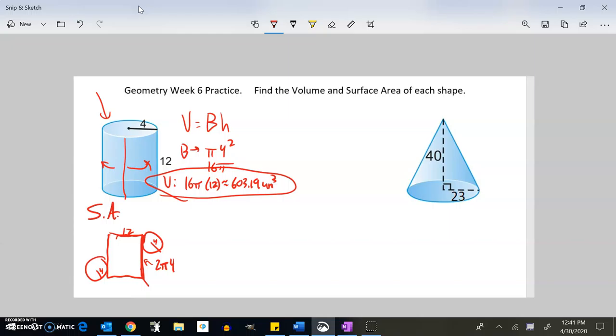So the surface area of just this rectangle is 12 times 8π, and that's 96π. So I have my rectangle at 96π.